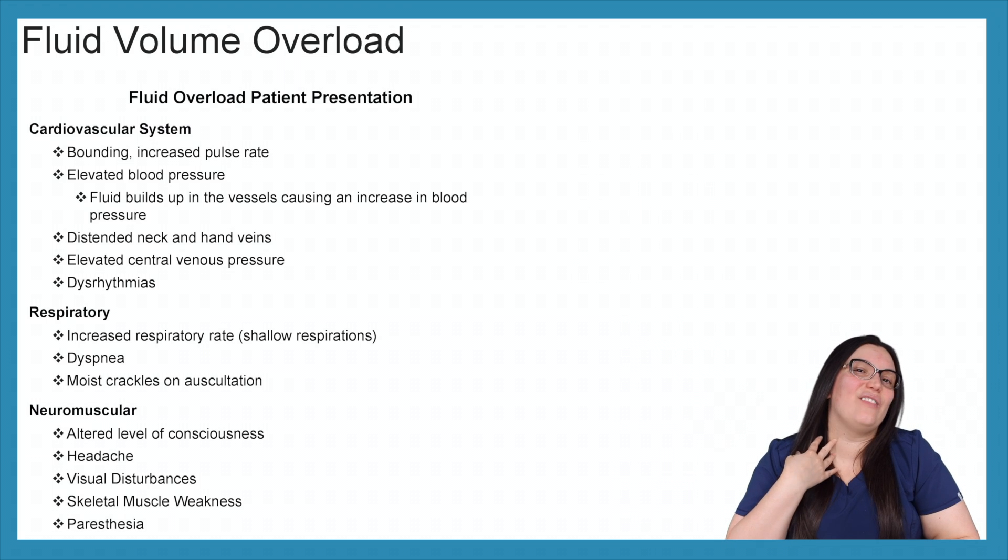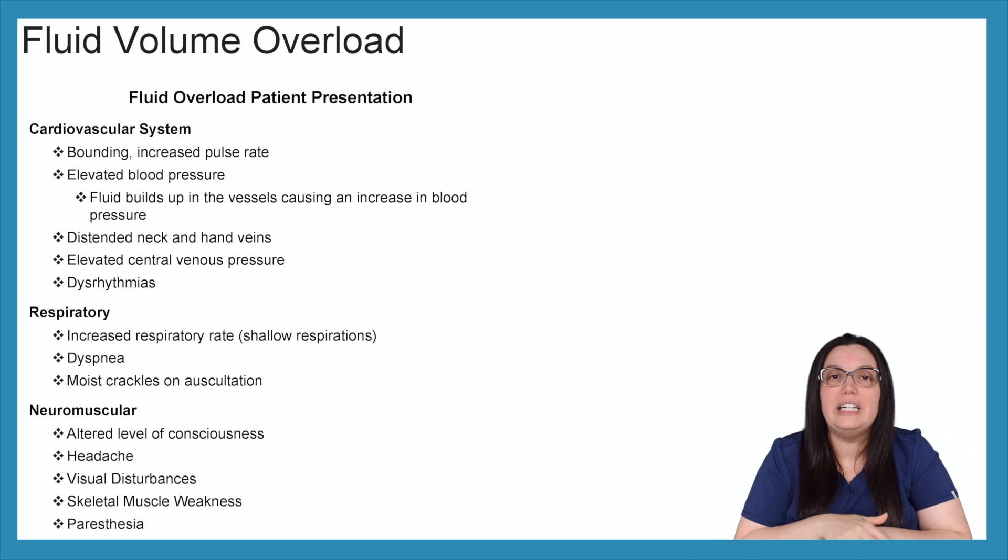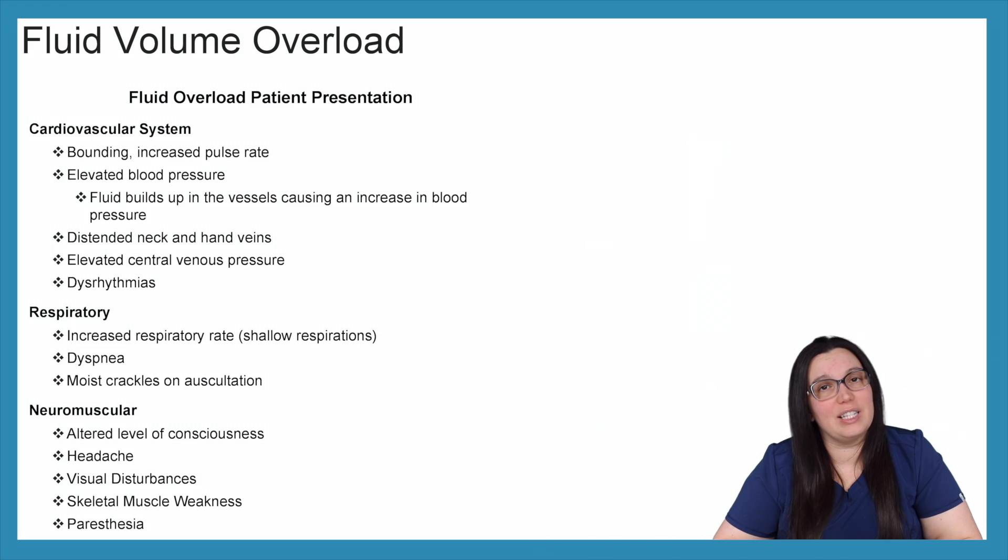Distended neck veins and hand veins. You're going to see you're extremely fluid overloaded. Everything is backing up. All of your veins are going to get distended. Elevated central venous pressure as well as dysrhythmias because if we have a dilution of our electrolytes, you're going to see some dysrhythmias because of that.